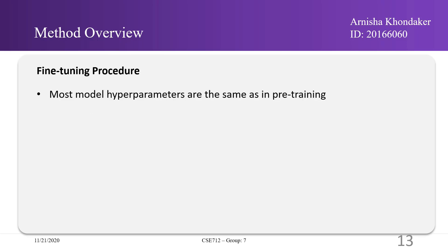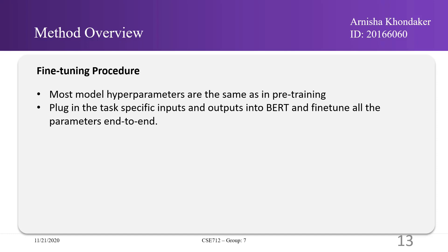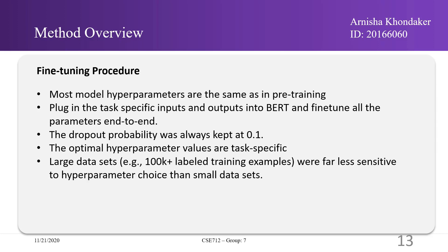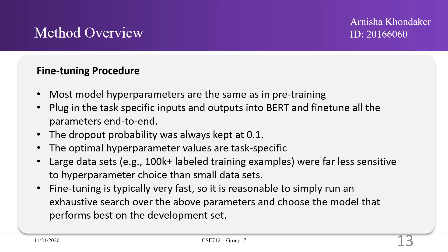In fine-tuning, most model hyperparameters were kept the same as in pre-training with the exception of batch size, learning rate, and number of training epochs. For each specific task, inputs and outputs were fed into BERT and all parameters were fine-tuned end-to-end. The dropout probability was always kept at 0.1. The authors observed that optimal hyperparameter values are task-specific. For large datasets, sensitivity to hyperparameter choice was far less than for small datasets. Since fine-tuning is typically very fast, it is reasonable to perform an exhaustive search over the parameters and choose the model that performs best on the development set.